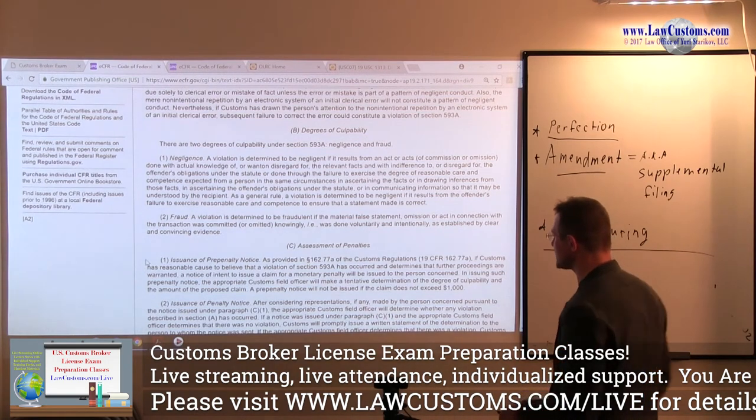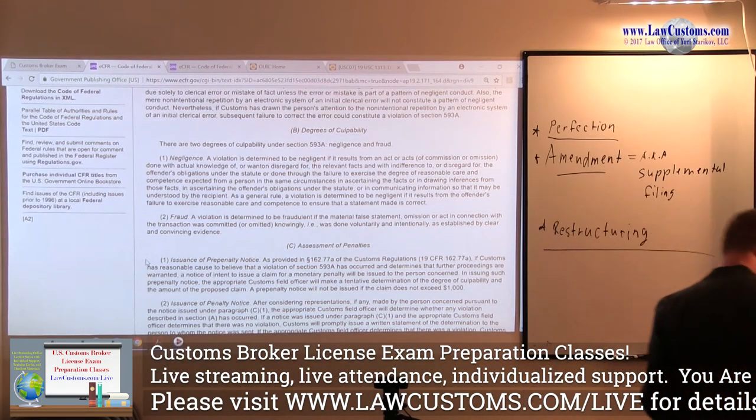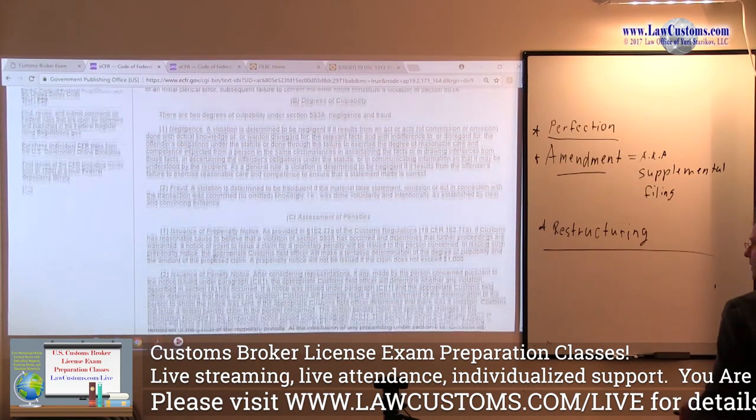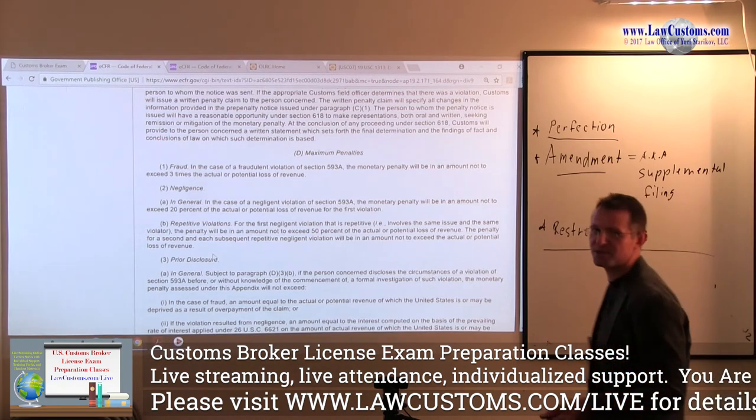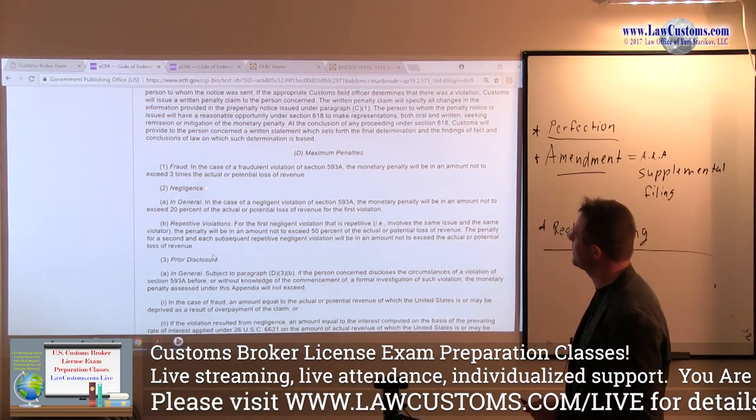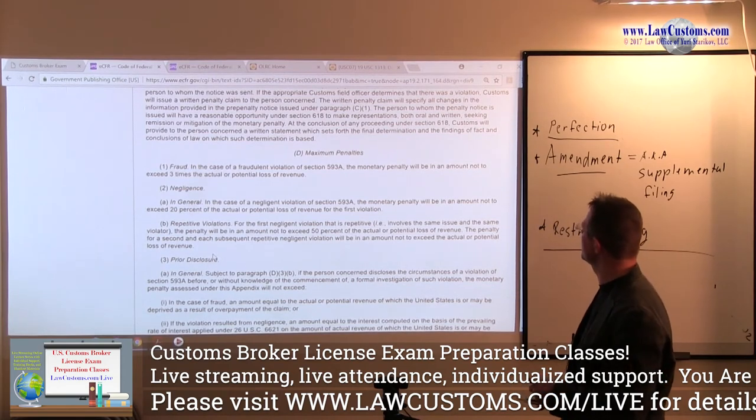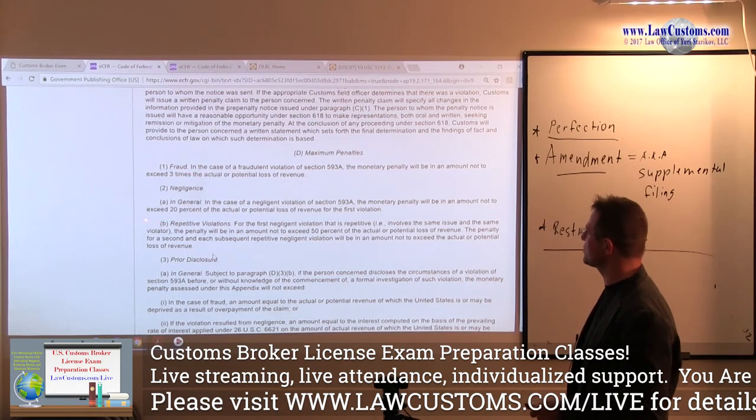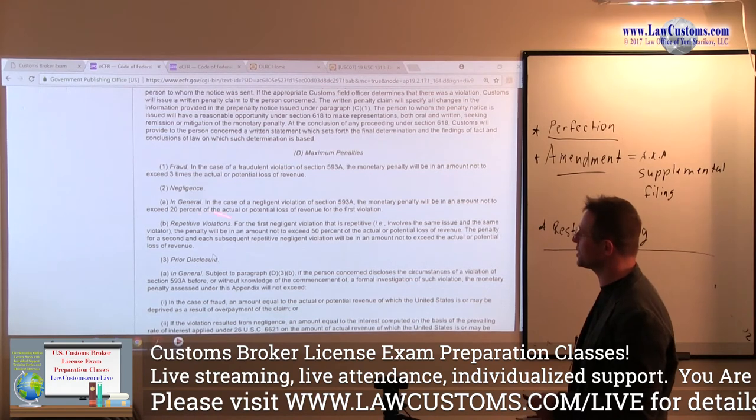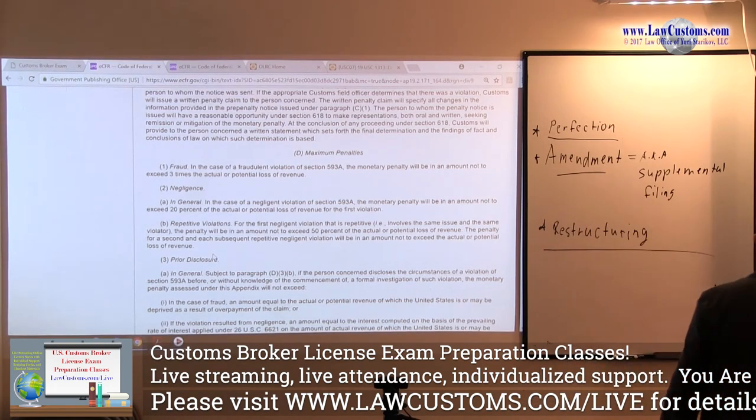And the assessment of penalties. Let's see. Maximum penalties for fraud. If you intentionally deceive customs, meaning that you have culpable mental state, right? Amount not to exceed three times of actual potential loss of revenue. So, three times the amount you've been asking. Negligence, however, is 20% of the actual potential loss of revenue for the first violation. So, you have a sliding scale, right? But, if you are participating in the compliance program, and I am going back to the outline now.